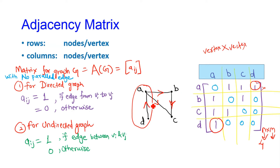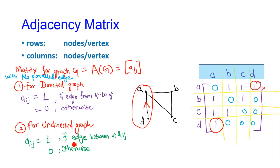For the directed graph, if there exists an edge going from D to A, we write entry for D to A as 1. But since the edge is not going from A to D, we write 0 there. For an undirected graph, the direction arrow is not there, so we can write the entry for both D to A and A to D as 1. This is the adjacency matrix.